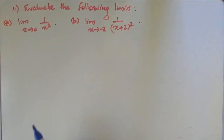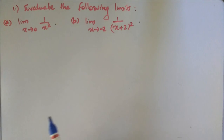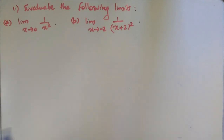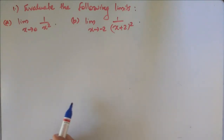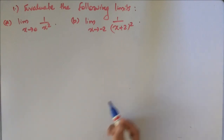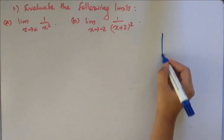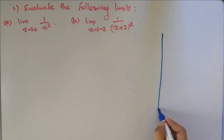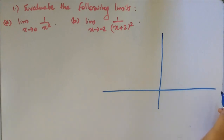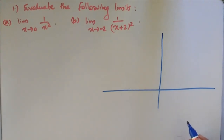First one: limit x tends to 0. The function f(x) is 1 by x squared. Now, the function of x is positive.